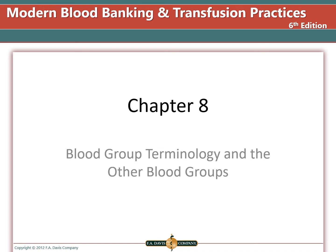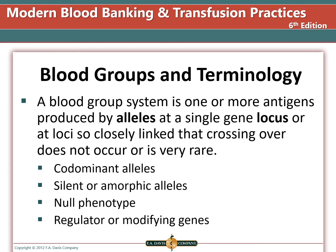A blood group system is one or more antigens produced at alleles at a single gene locus or loci so closely linked that crossing over does not occur or is very rare. Most blood group alleles are inherited in a codominant manner and express the corresponding antigens when present. There can be silent or amorphic genes — alleles that exist that make no antigen.